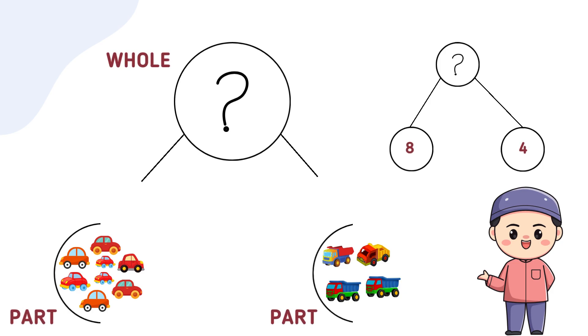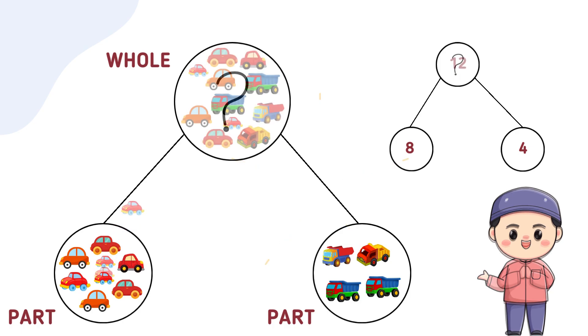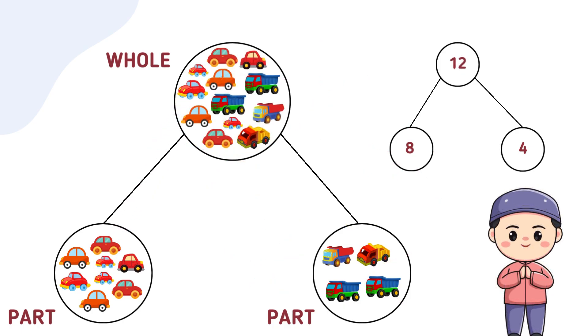Let's try something a little different now. Let's flip the idea. Instead of starting with the whole, what if you have 2 parts and need to figure out the whole? Here's the scenario. You have 8 toy cars in one group and 4 toy trucks in another. How can we use the part-part-whole cherry diagram to figure out the total? Got it? Let's solve it together. The parts are 8 and 4. When we combine them, we get 8 plus 4 equals 12. So the whole is 12 toys.